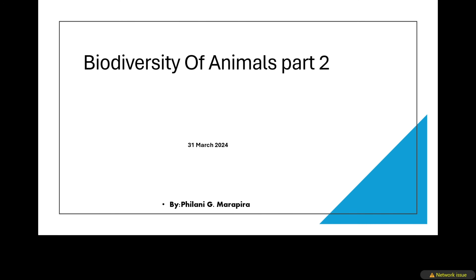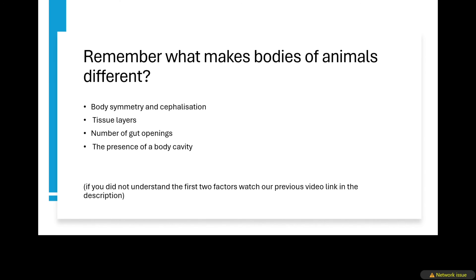Ladies and gentlemen, welcome to Irrigate. Today we are going to be talking about the biodiversity of animals. We are doing part two. Remember what makes the bodies of animals to be different — it is the body symmetry, cephalization, and tissue layers. So in our previous video we did these three things. Today we are just going to be talking about the number of gut openings as well as the presence of the body cavity. Stay tuned.